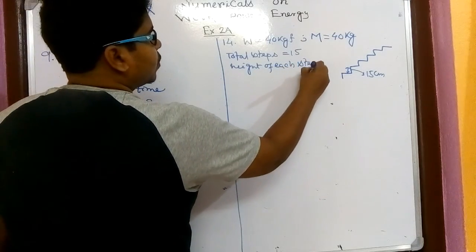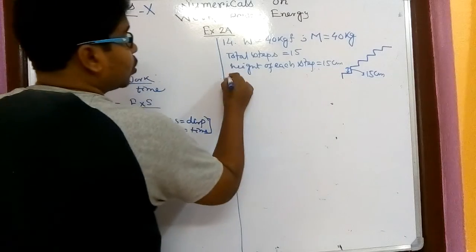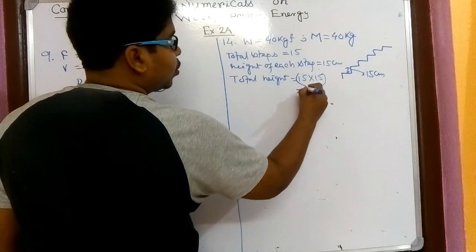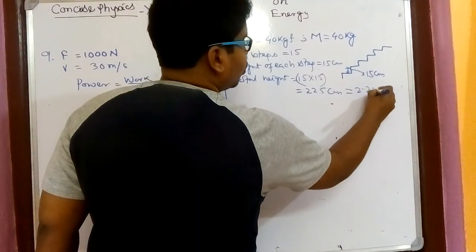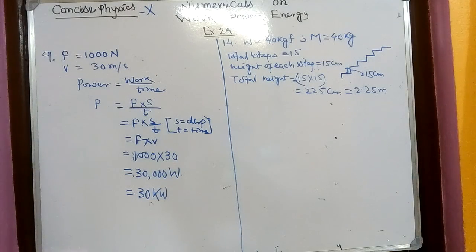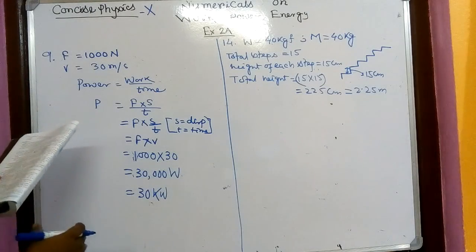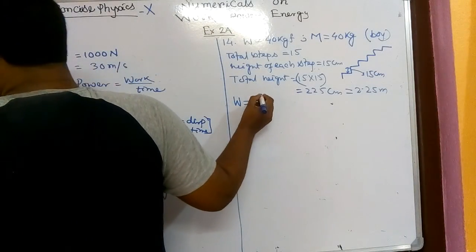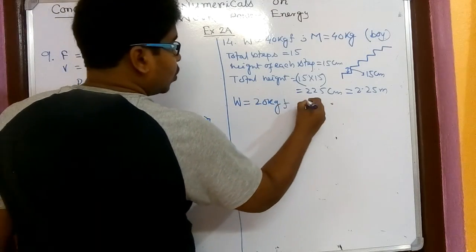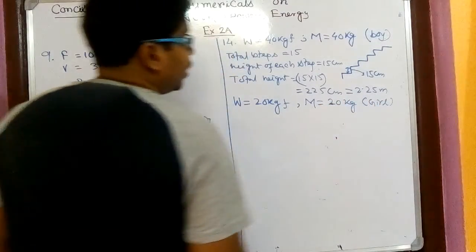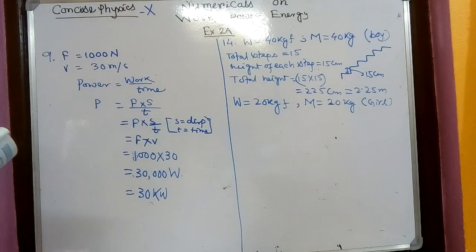Each step equals 15 centimeters, so total height equals 15 into 15, that is 225 centimeters or 2.25 meters. Now it is told that the boy is able to reach in 10 seconds. The weight of the girl is 20 kgf, so mass will be 20 kg, and she is able to reach it in 5 seconds.